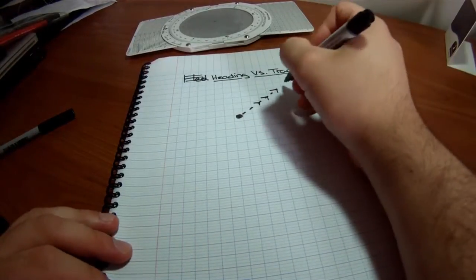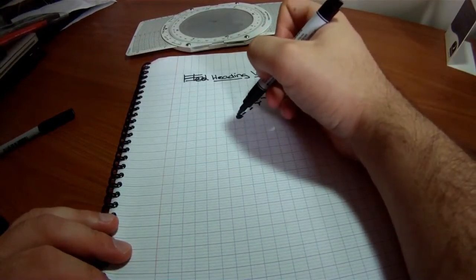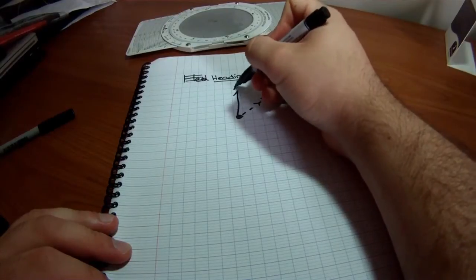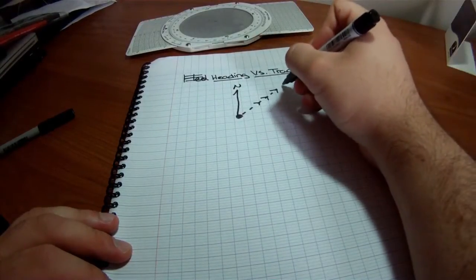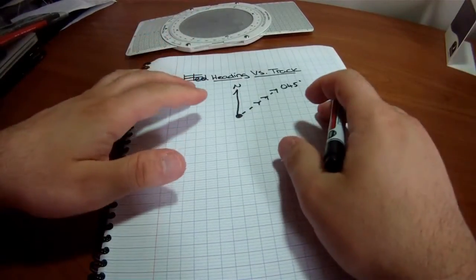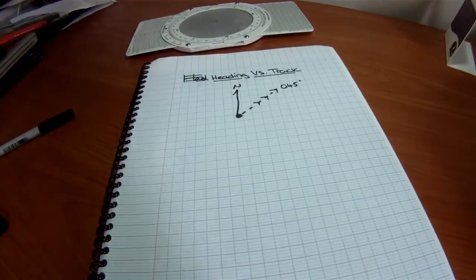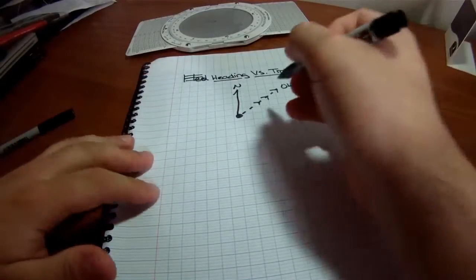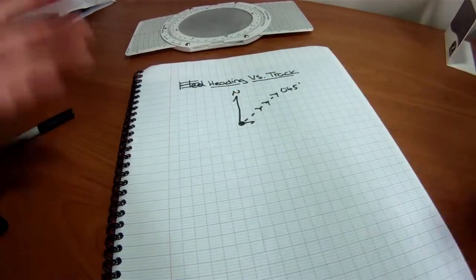Well, let's say this direction is, let's say we've got true north here, and therefore this will be about 045 degrees. This is the true track. However, the plane might not actually be pointed in that direction. It could be pointed in that direction.